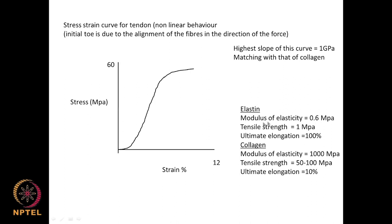Elastin has a modulus of elasticity of 0.6 megapascal, tensile strength of 1 megapascal, and ultimate elongation of 100 percent. Collagen has a modulus of elasticity of 1000 megapascal (1 gigapascal), tensile strength of 50 to 100 megapascal, and ultimate elongation of about 10 percent. So collagen has much lower ultimate elongation when compared to elastin.